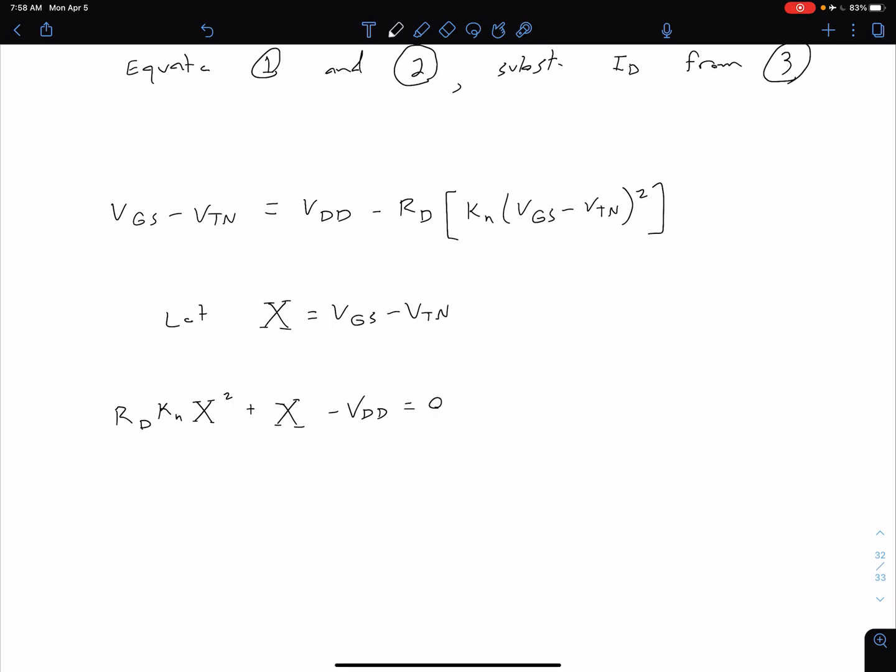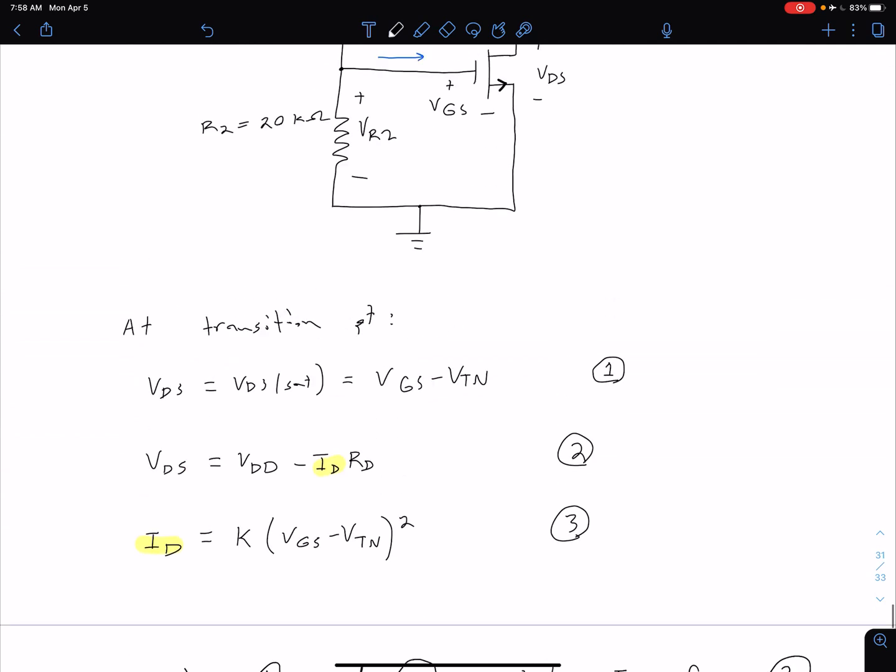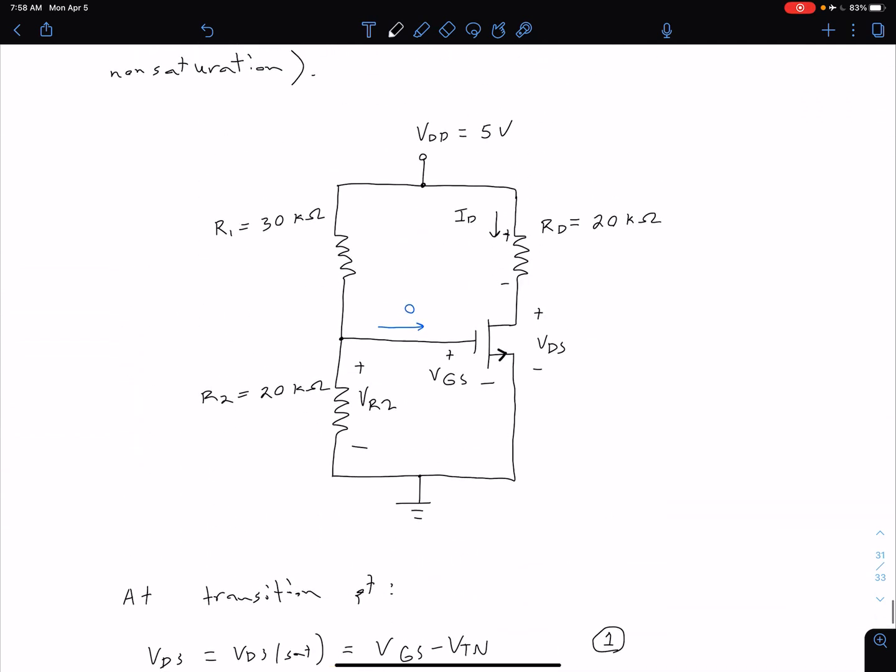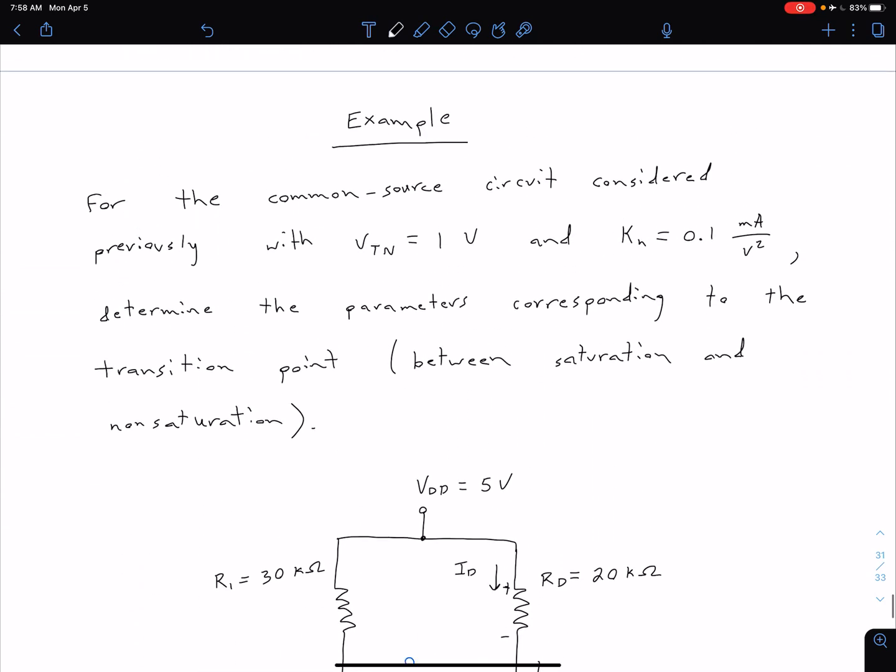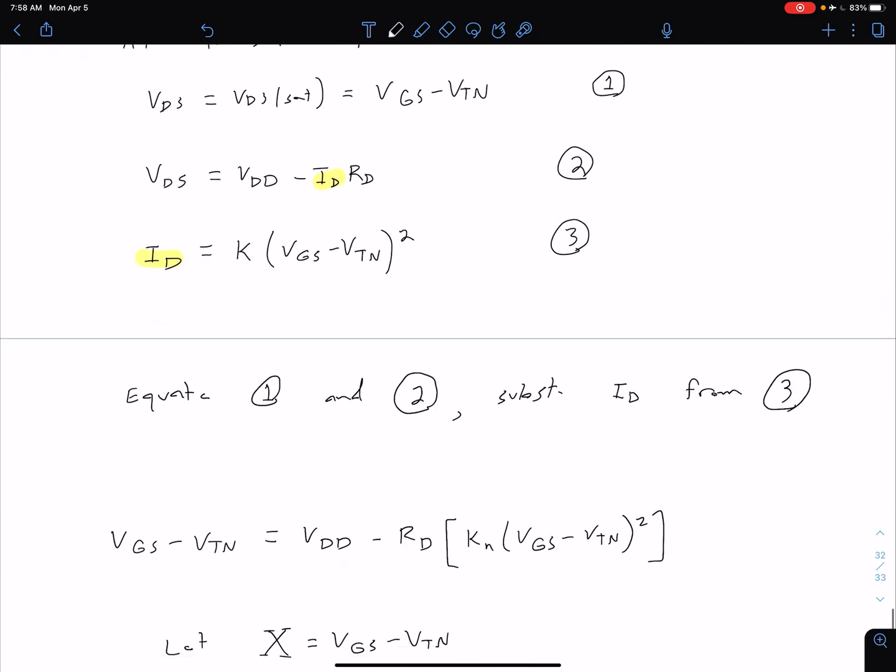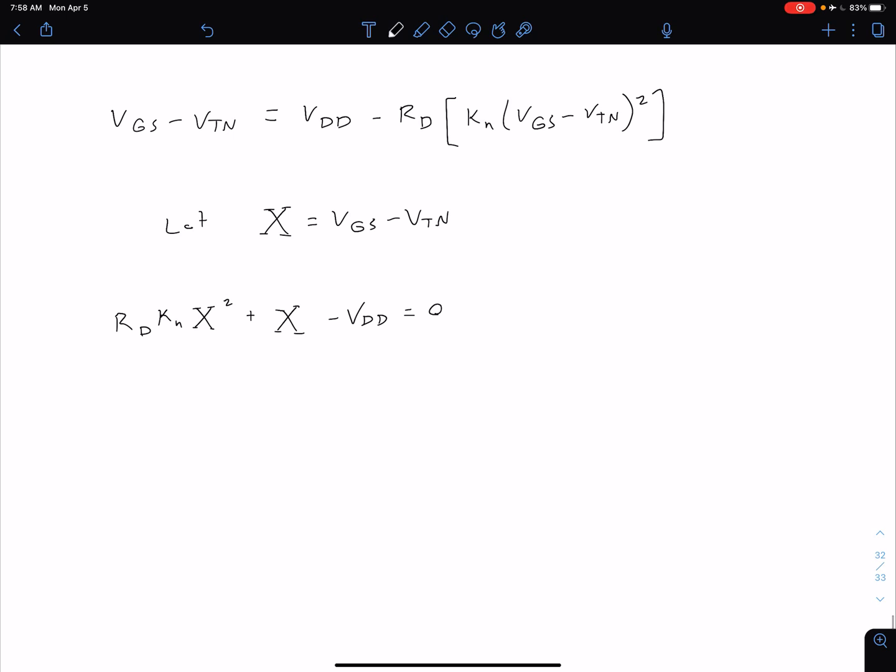Now we're ready to plug in our values. We come back up to our circuit here. We see VDD is equal to five, RD is 20K ohms, and our KN was given as 0.1 milliamps per volt squared. If we plug all of that in, we end up with two X squared plus X minus five is equal to zero.